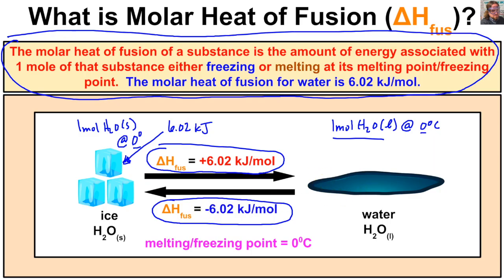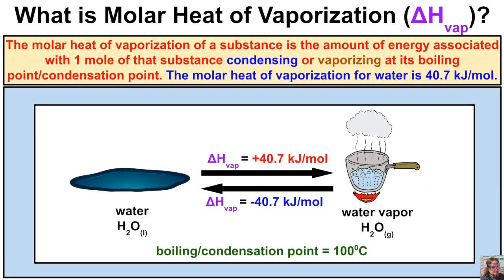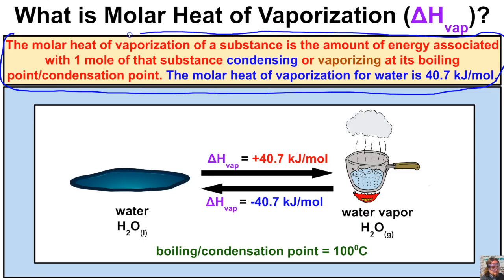Now let's look at the molar heat of vaporization. The molar heat of vaporization of a substance is the amount of energy associated with one mole of that substance condensing or vaporizing at its boiling point or condensation point. The molar heat of vaporization for water is 40.7 kilojoules per mole.